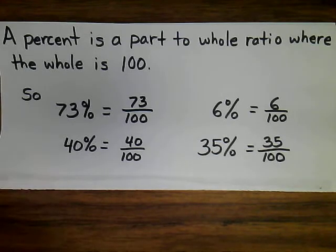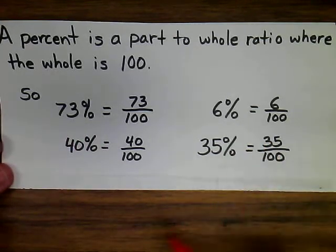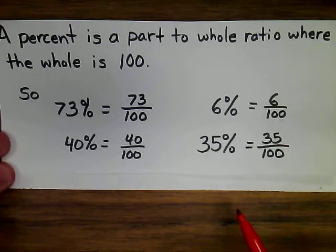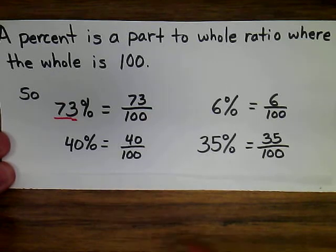Now, as we look at these different percents, 73%, 40%, 6%, and 35%, it's very easy to convert them to a fraction. You simply take the number of the percent and put it over 100. The tricky part is, however, then most of the time when dealing with fractions, we like to write them in lowest terms.